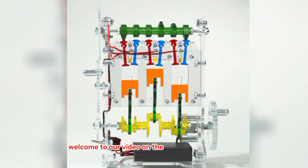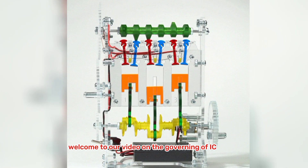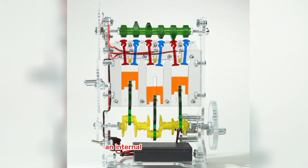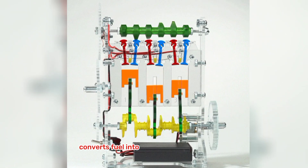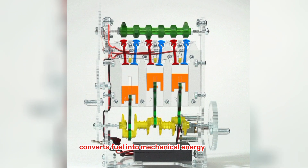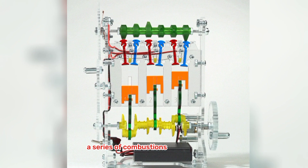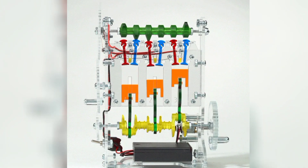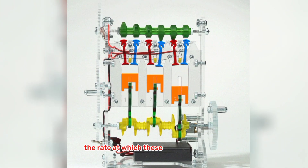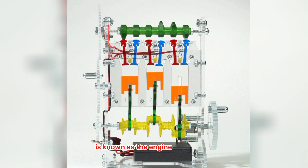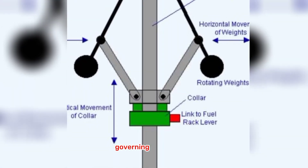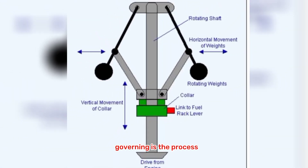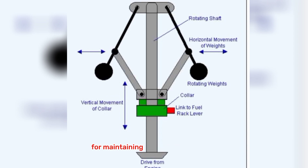Welcome to our video on the governing of IC engines. An internal combustion engine converts fuel into mechanical energy through a series of combustions inside the engine. The rate at which these combustions occur is known as the engine speed or RPM. Governing is the process of controlling the speed of an IC engine, and it is important for maintaining the engine's efficiency and preventing damage.